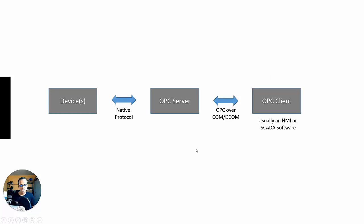Now in the implementations of OPC UA I've seen thus far, practically this hasn't changed — it's the same structure. There's now an OPC UA server and an OPC UA client. The OPC UA server might be doing some slightly different things, but it could still talk various protocols to various devices. So here are the aspects — the jumping-off points — I want to explore in moving from classic OPC to OPC UA.